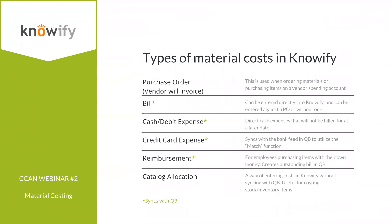There are several items that create material costs against a job in NOAAFI. Purchase orders are the most straightforward — they represent any purchase you'll receive a bill for later, called vendor-will-invoice. It logs a committed cost against the job based on expected pricing, and later we reconcile it by logging a bill against the purchase order. The bill then syncs with your QuickBooks account.